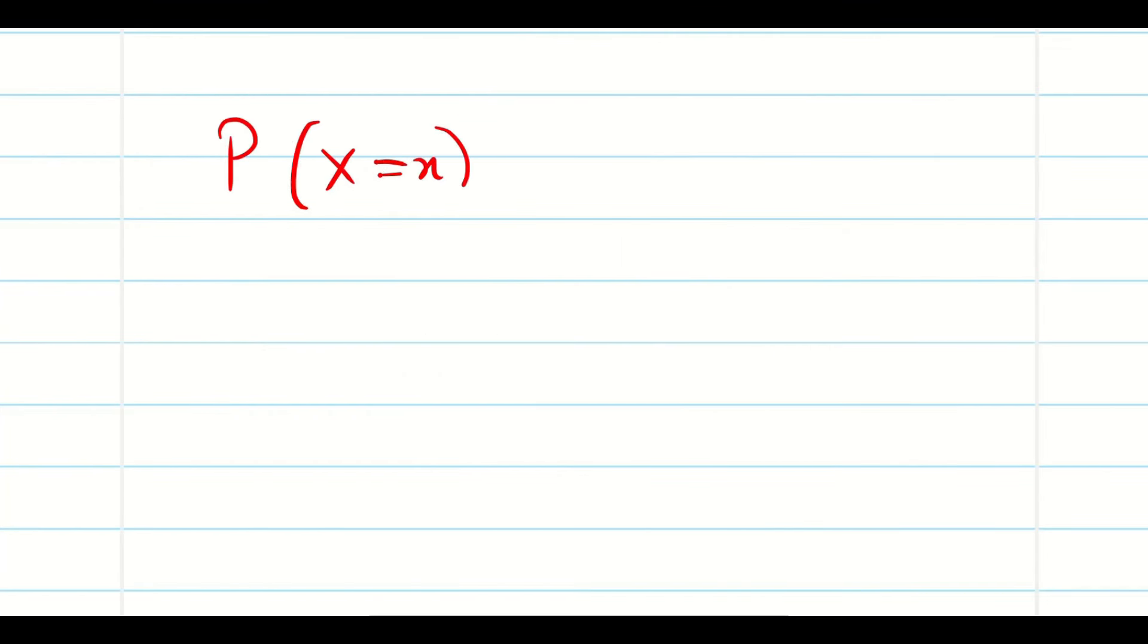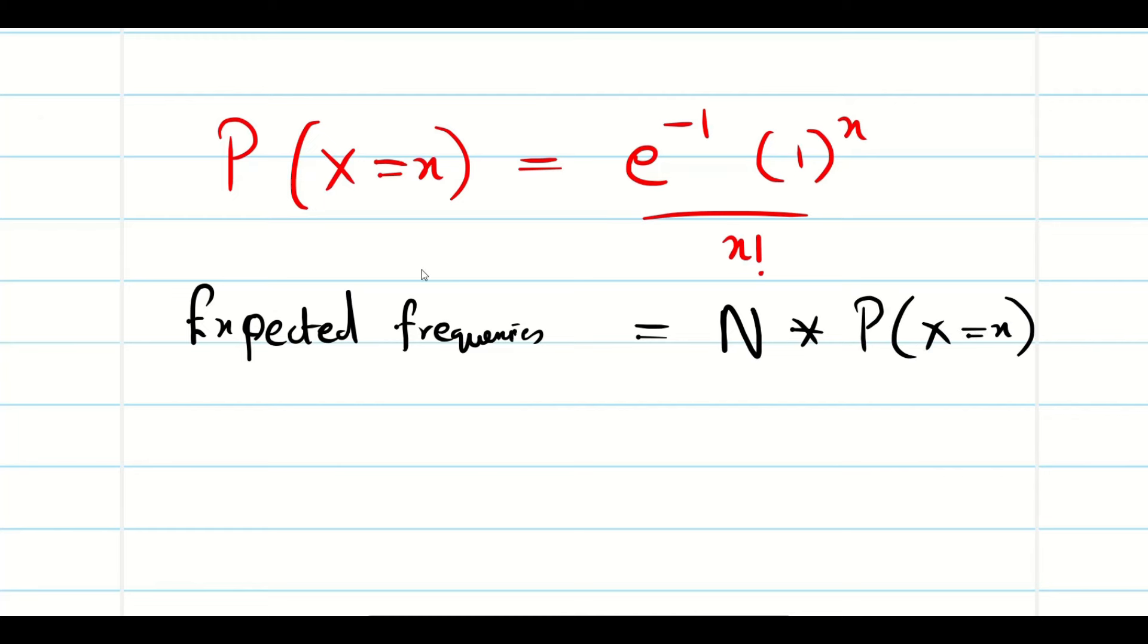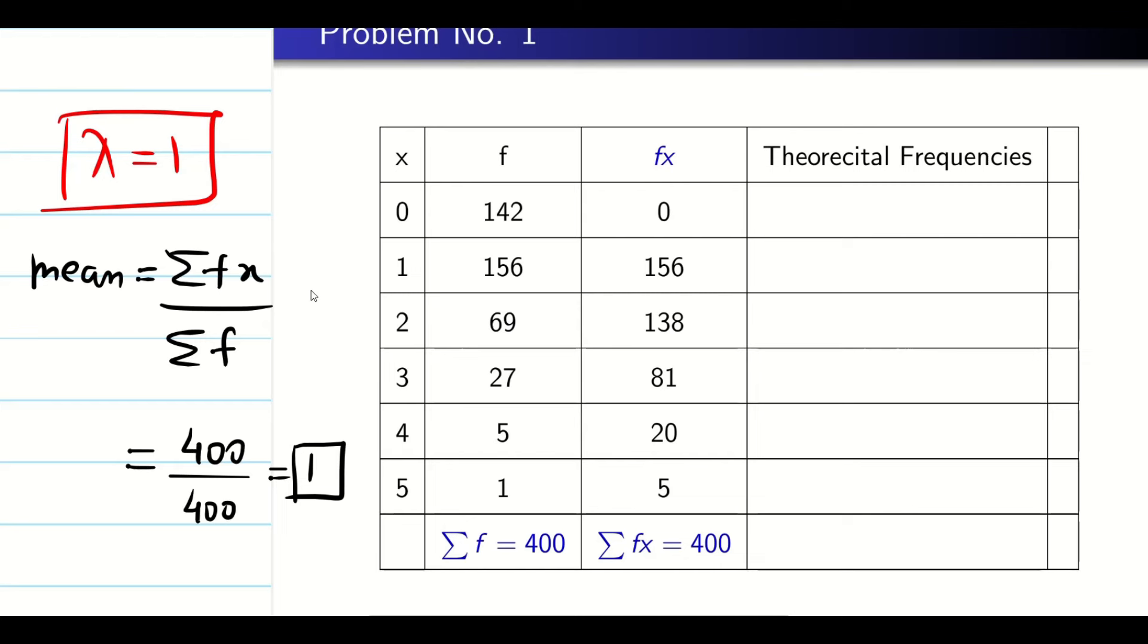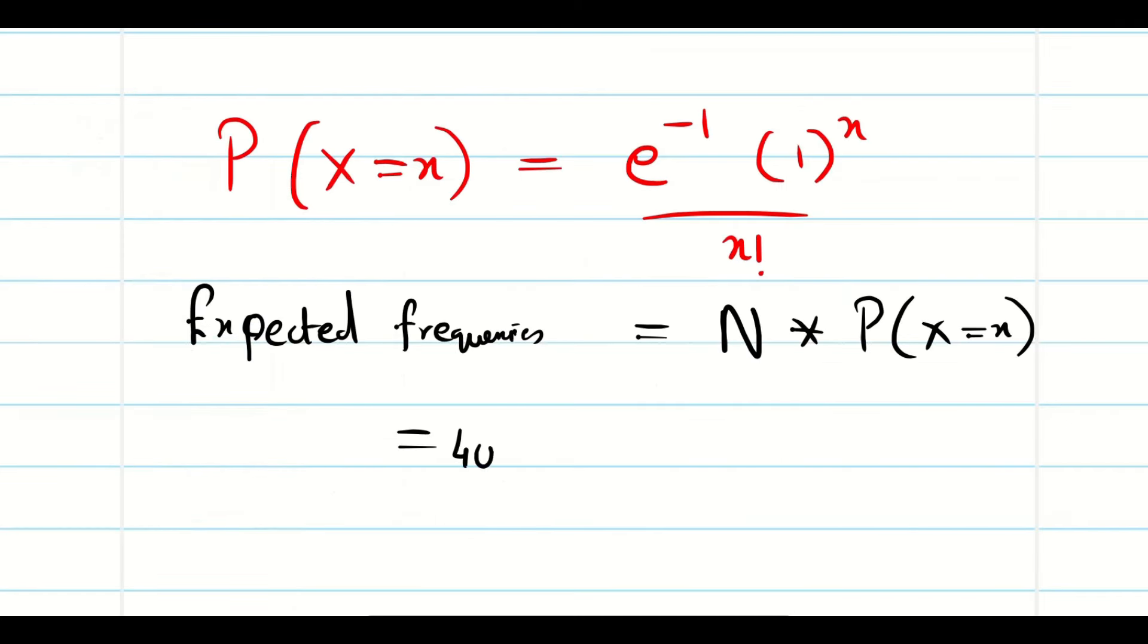So I just recall the Poisson distribution formula. My lambda is 1. So e power minus 1, 1 power x divided by x factorial. So now my aim is to find the expected frequencies. The expected frequencies. So it is going to be capital N into probability of x. So now just now we know my summation f is 400. So it is going to be 400 into e power minus 1 divided by x factorial.